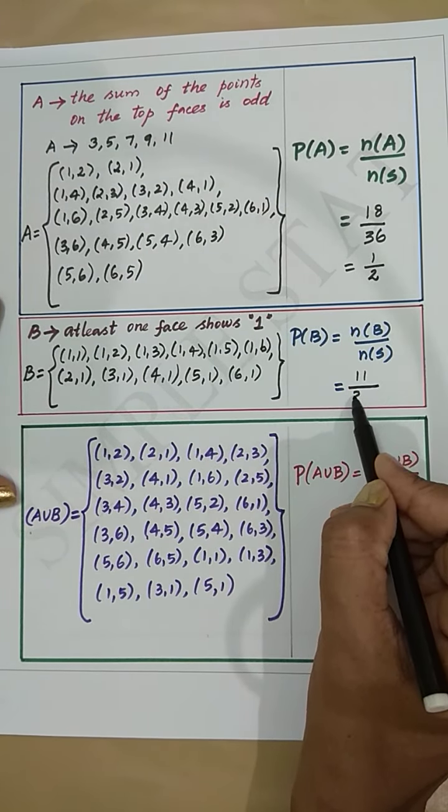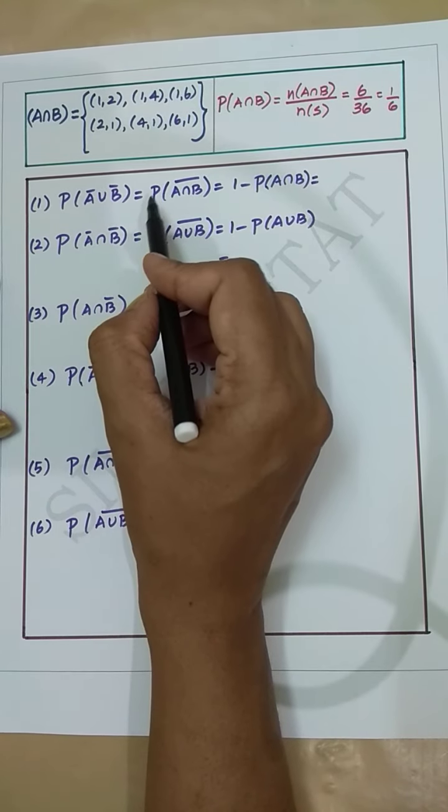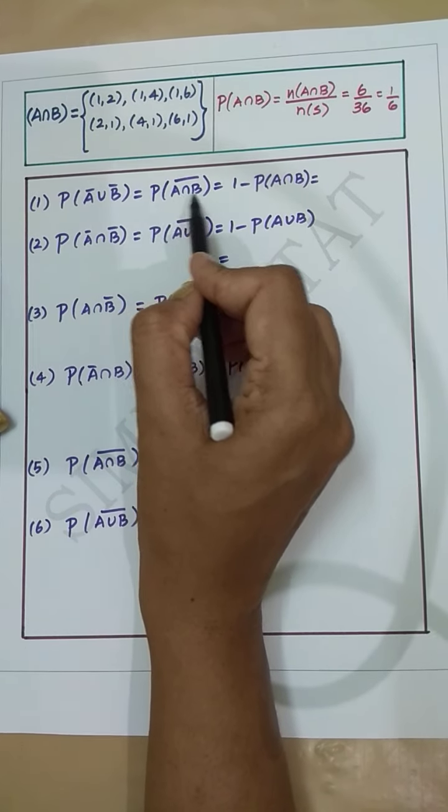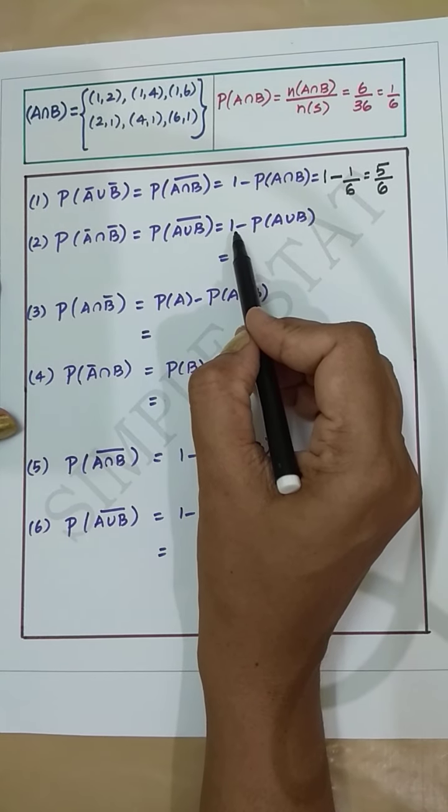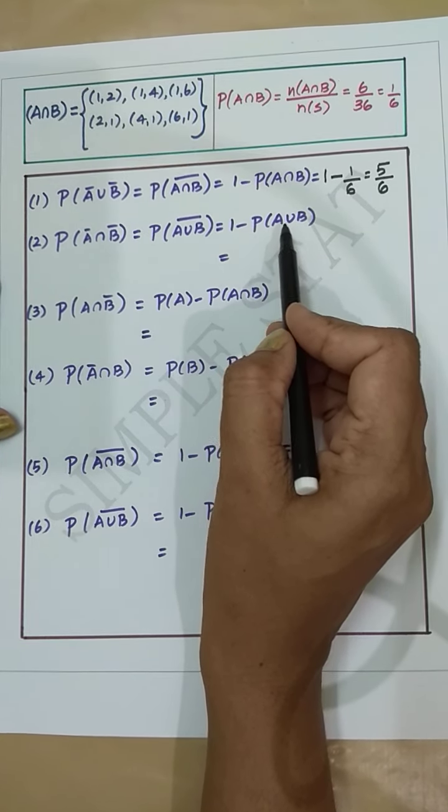Using these values, let's find the required probabilities. First subdivision: probability of A-bar union B-bar equals probability of (A intersection B)-bar, which is 1 minus probability of A intersection B. Since probability of A intersection B is 1/6, we get 1 minus 1/6 = 5/6.